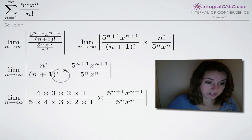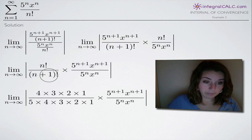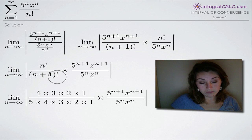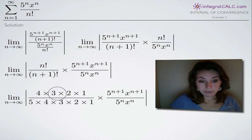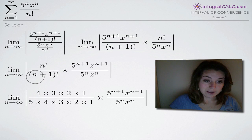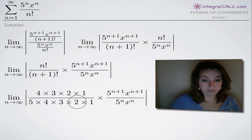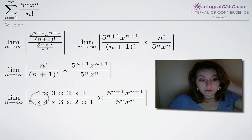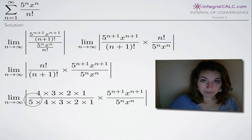Now I'm going to tackle this first fraction: n factorial divided by the quantity n plus 1 factorial. To illustrate how this simplifies, let's substitute 4 for n. 4 factorial is 4 times 3 times 2 times 1 in the numerator. In the denominator we'd have 4 plus 1, which is 5, so 5 factorial: 5 times 4 times 3 times 2 times 1. No matter what number we pick for n, all the terms in the numerator cancel with every term in the denominator except the first one.